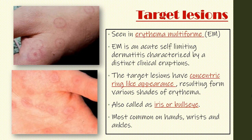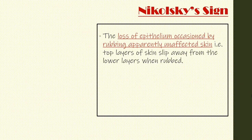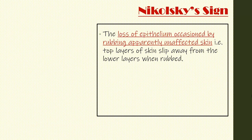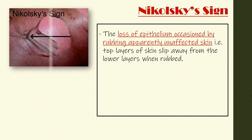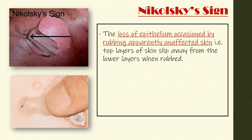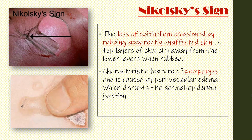The Nikolsky sign is the loss of epithelium occasioned by rubbing apparently unaffected skin. In simple words, the top layers of skin slip away from the lower layers when rubbed. It is a characteristic feature of pemphigus and is caused by perivascular edema which disrupts the dermal-epidermal junction.